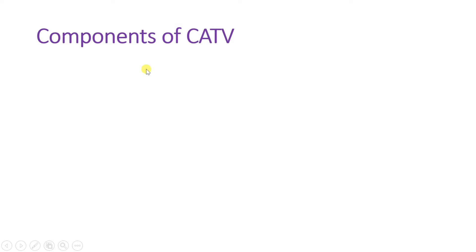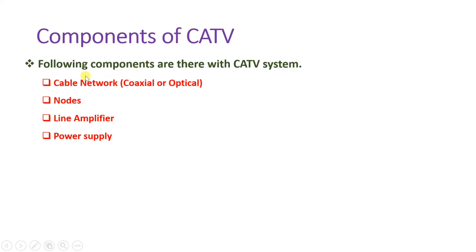Now I will explain the different components of CATV. In CATV, there is a huge network of cables, and those cables could be coaxial cable or optical cable. This is the major component of CATV, and there are nodes from where the signal is connected. Cable operators have nodes, and those nodes provide services to different users.